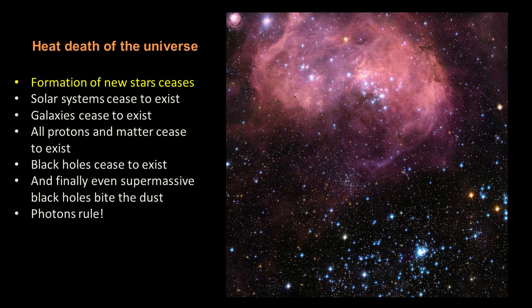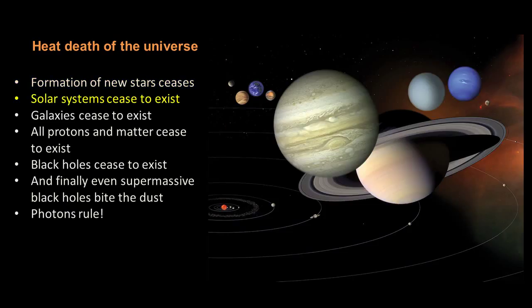So here is the hypothetical breakdown of what happens as the universe grows darker and darker. After a trillion years, yes, after a trillion years, the formation of new stars comes to a grinding halt. After a quadrillion years, solar systems are no longer created.